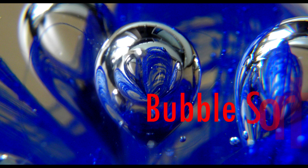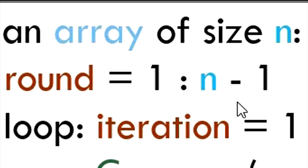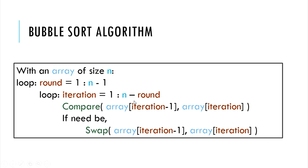This is the bubble sort algorithm. Let's say we have an array of size n. There are two loops, rounds and iterations under each round. We will have n-1 rounds in total, starting from 1 and ending at n-1. Similarly, we will have n-round iterations under each round. In the first round for example, we will have n-1 iterations.